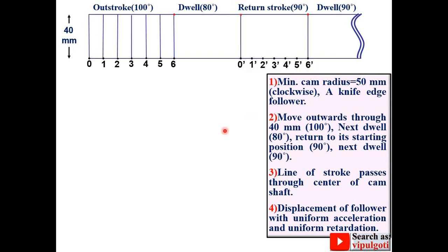Now as you can see, follower with uniform acceleration for both ascent and descent angle. And so you have to divide this vertical center line of the outstroke into six equal parts. And give the name as A, B, C, D, E and F.